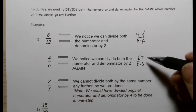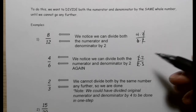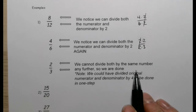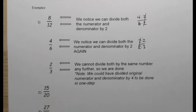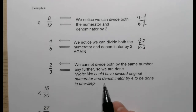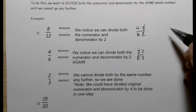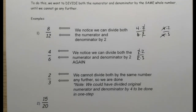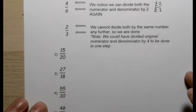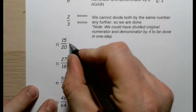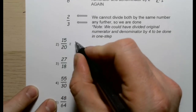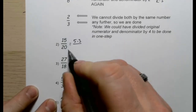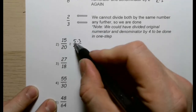Let's look at a few more examples. For 15 over 20: 15 and 20 are both divisible by five, so 15 is five times three and 20 is five times four — the fives cancel, leaving three-quarters. For 27 over 18: 18 is three times six, so we cancel the threes and get nine over six. Nine and six are both divisible by three, giving us three over two.